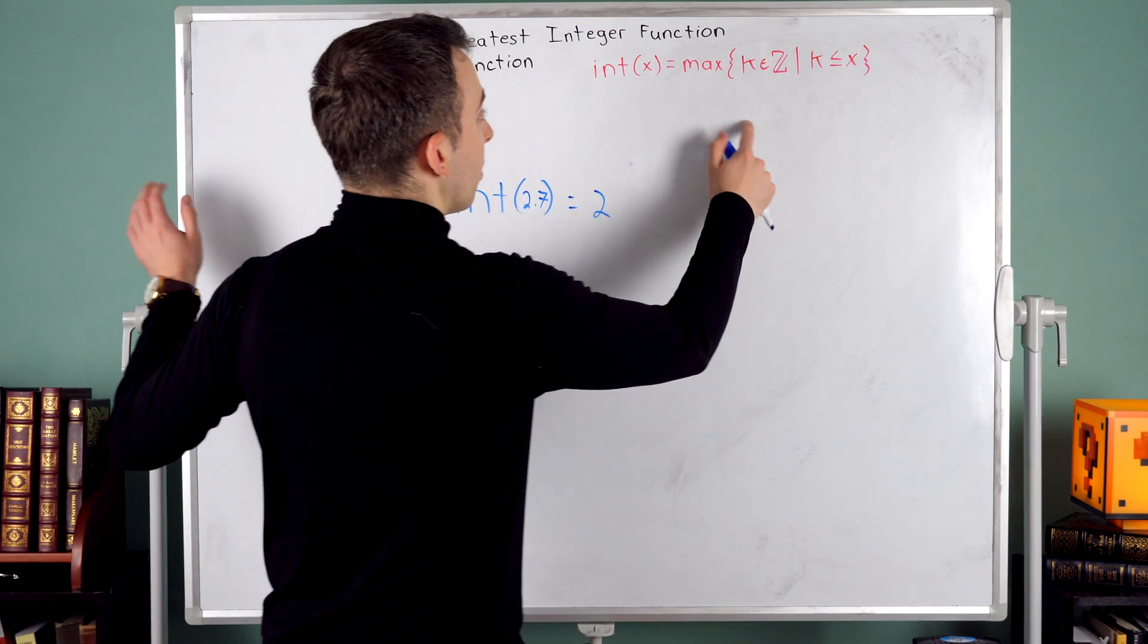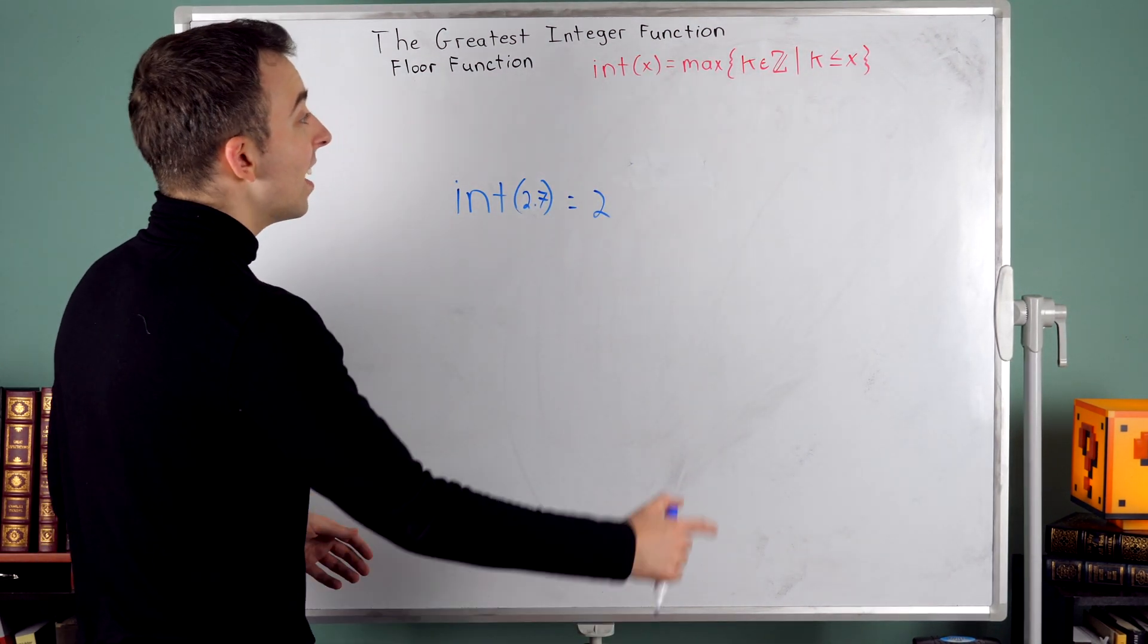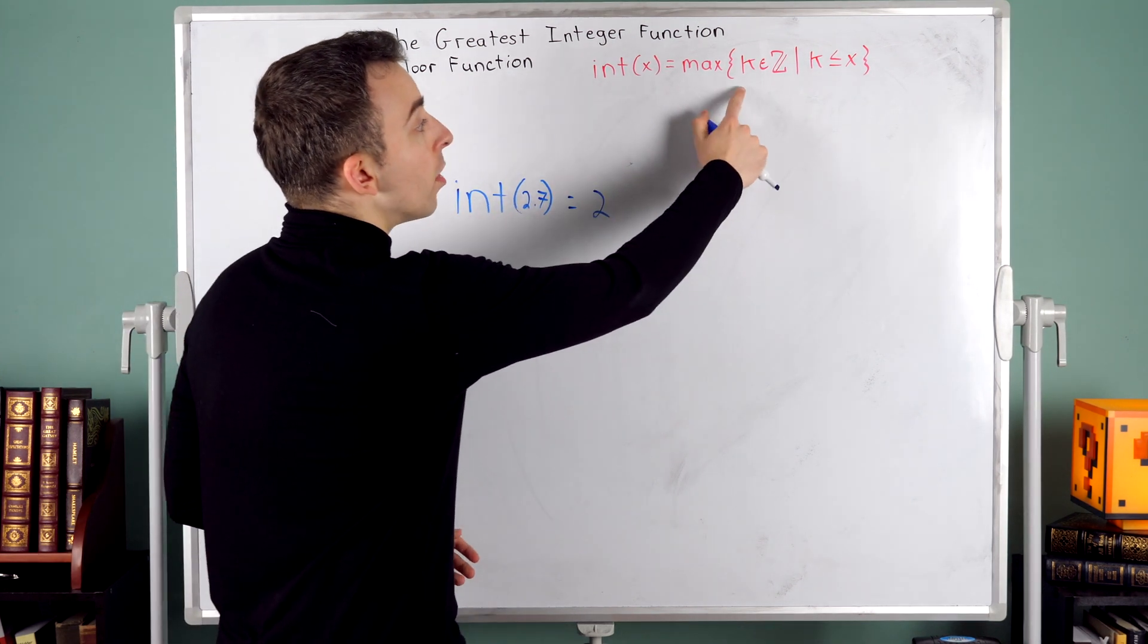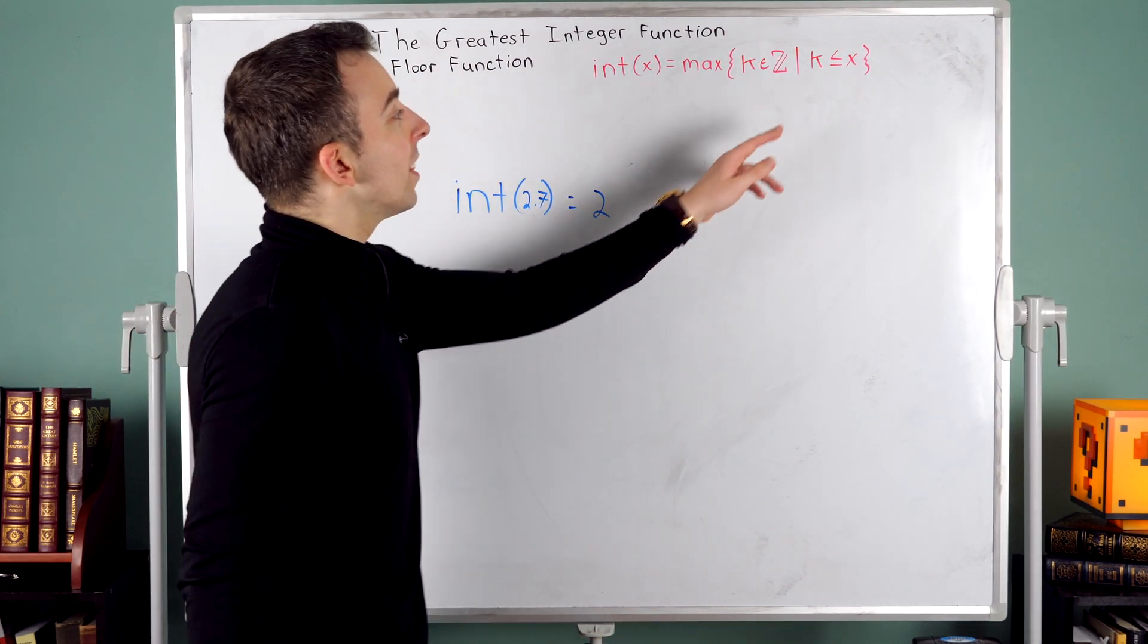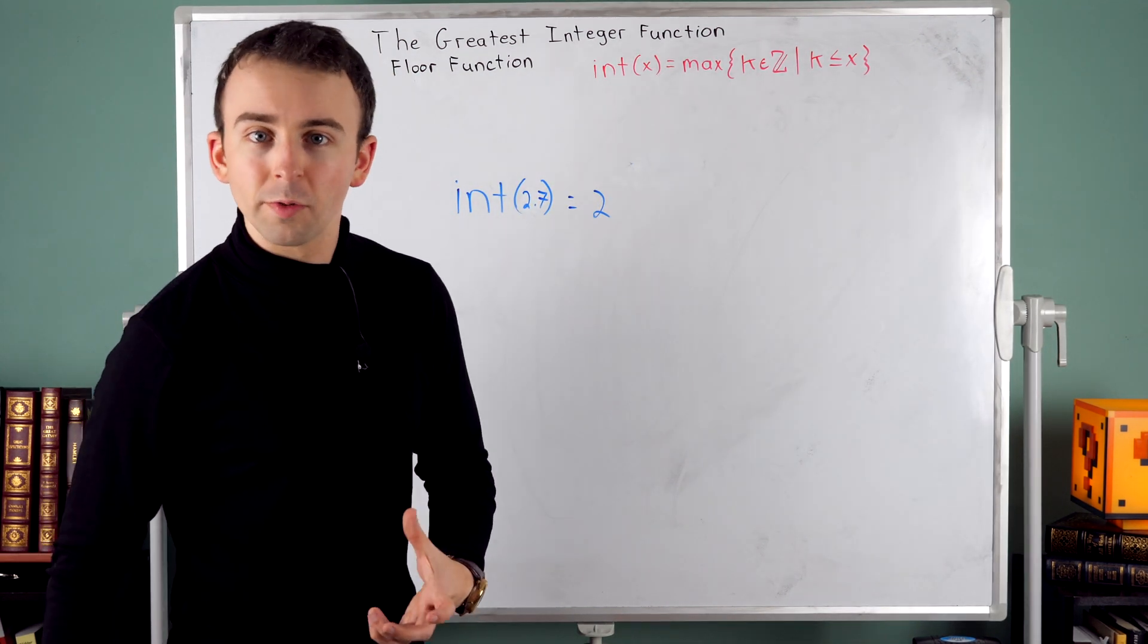But as a quick explanation of this, this says the greatest integer function of a real number x is the maximum of all integers that are less than or equal to x. That's why it's called the greatest integer function.